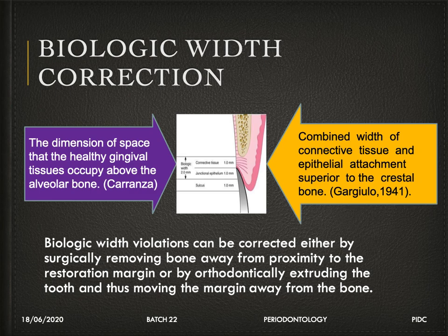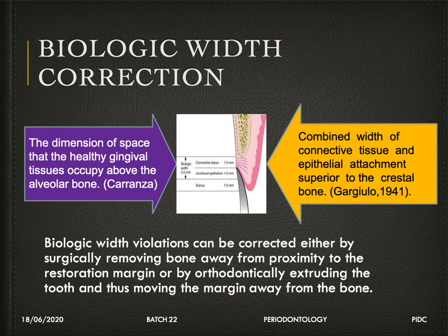Biological width violation can be corrected either by surgical means or by orthodontic forced extrusion of the tooth, moving the tooth away from the bone margin so that the 2 mm width is maintained. If the biological width is violated — if the gap between the crown margin and the crest of alveolar bone is less than 2 mm — a disease process occurs, resulting in either gingival recession or bone resorption.